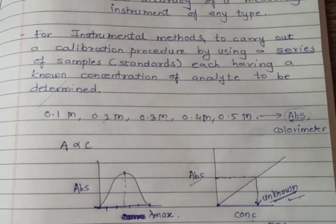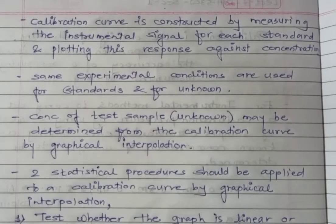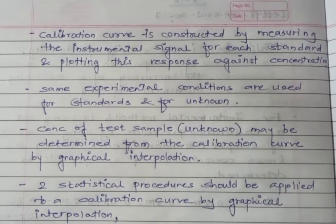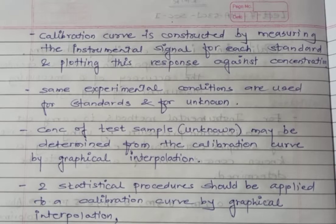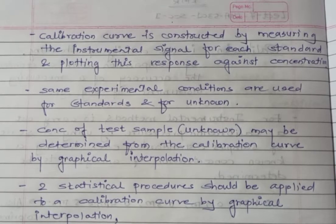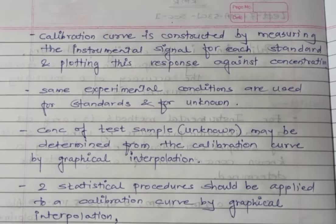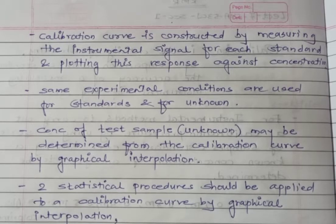Simply, a calibration curve is constructed by measuring the instrumental signal for each standard and plotting this response against concentration. For example, if you have to find the amount of sodium and potassium present in a given sample by using the flame emission spectrophotometer, at that time initially you can prepare stock solutions of sodium and potassium which are of 1000 ppm.